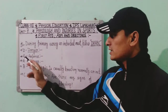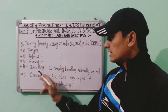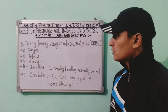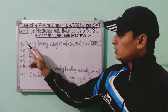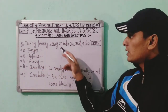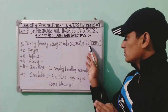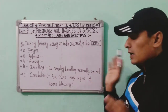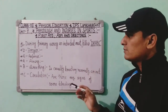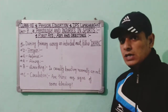To summarize: D stands for Danger, R stands for Response, A stands for Airway, B stands for Breathing, and C stands for Circulation. During the primary survey, an individual must follow DRABC.